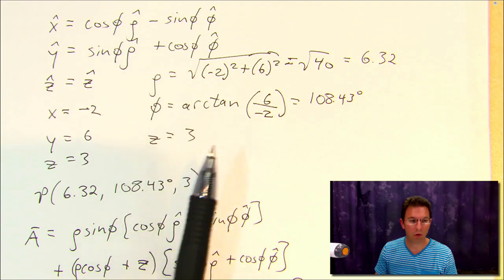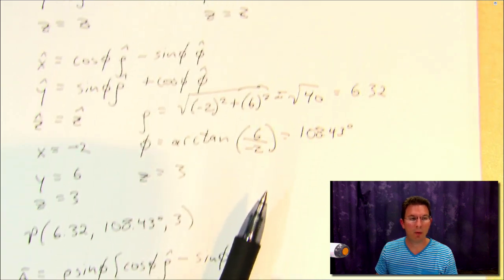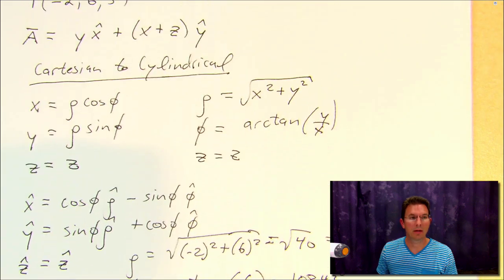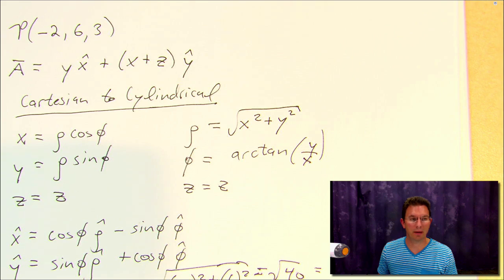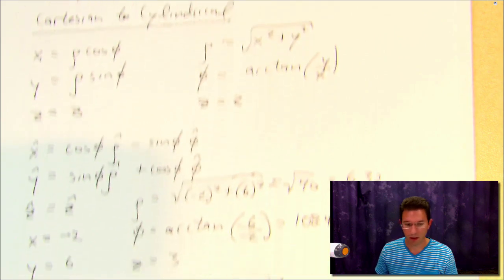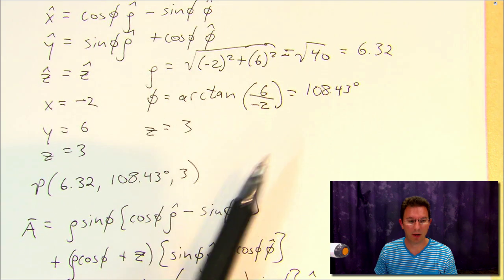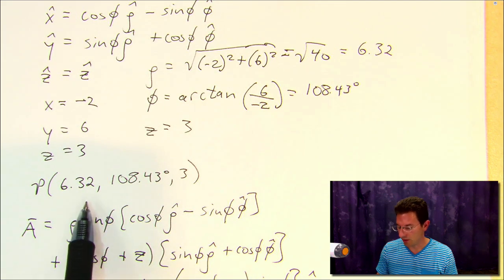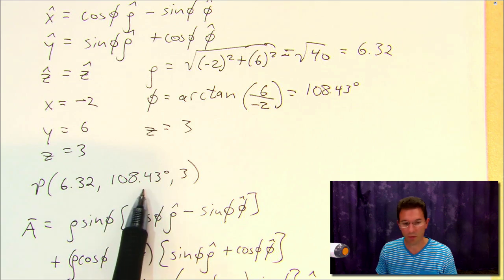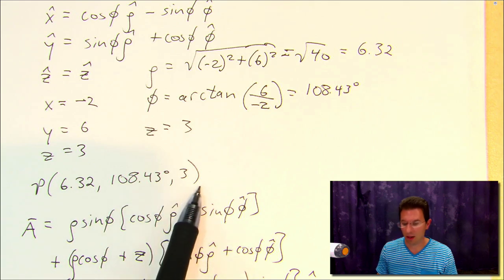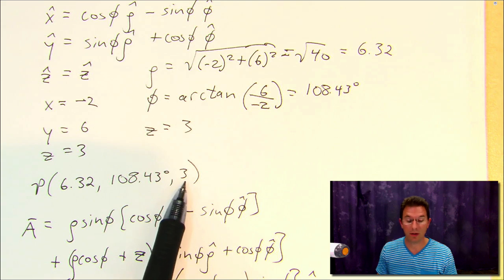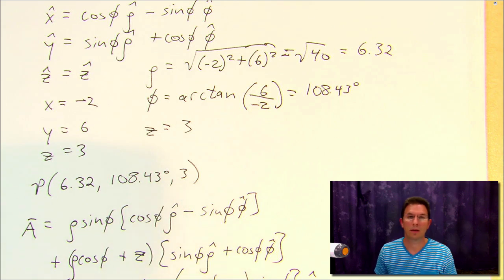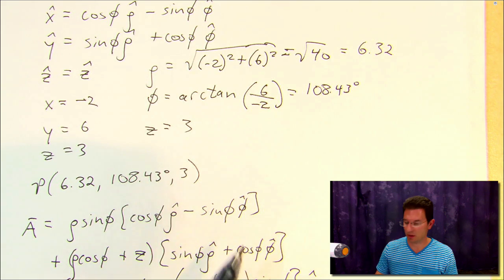So we can write this same point P, which in Cartesian coordinates is given by minus 2, 6, 3, in cylindrical coordinates as 6.32, that's a distance, 108.43 degrees, that's an angle, and 3 units along the z-axis, that's obviously distance. So distance, angle, distance in cylindrical coordinates.